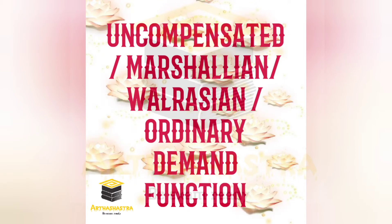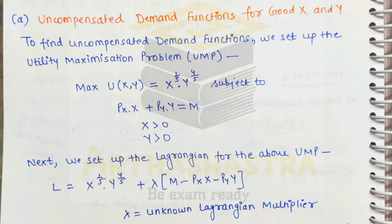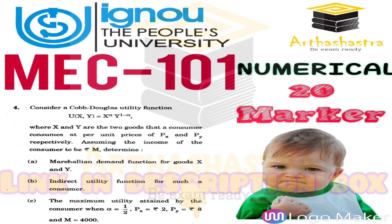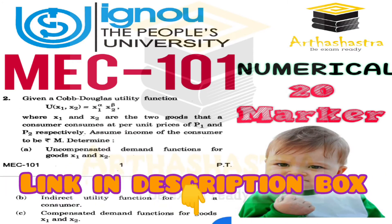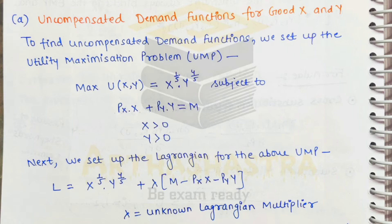Keep these terms in mind. A detailed representation of this type of numerical has already been uploaded on the channel — you can go and watch those videos. We set up the utility maximization problem as: maximize utility subject to the budget constraint and positive quantities of the two goods. Next we set up the Lagrangian: L equals the given utility function plus lambda times the budget constraint, where lambda is an unknown Lagrange multiplier.